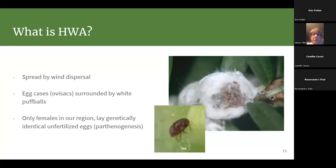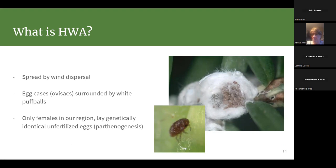Here it only feeds on eastern hemlocks, which are one of our keystone species, and there's nothing else controlling it. This is the kind of damage it can cause — it can absolutely decimate a hemlock stand. They are the size of a poppy seed or smaller. They spread on the wind, which means we can't stop them from spreading. HWA doesn't need males to reproduce — females reproduce through parthenogenesis, laying genetically identical unfertilized eggs, essentially cloning themselves.